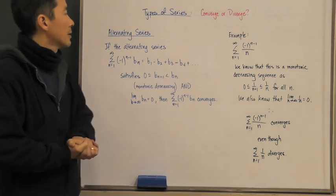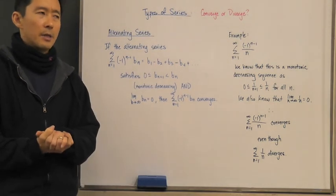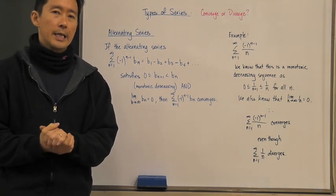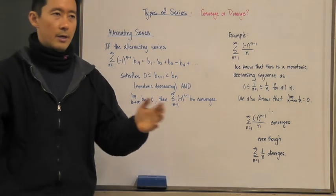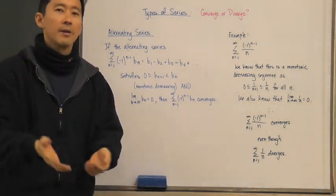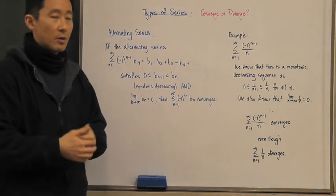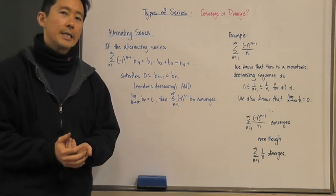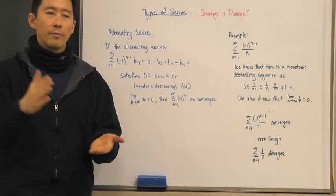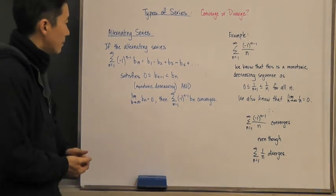Let's take a look at what we're going to call an alternating series. When you hear the word 'alternating,' it sounds like left to right, left to right, or up to down, up to down — and that's similar to what we find with an alternating series, where your terms go from positive to negative, positive to negative, positive to negative.